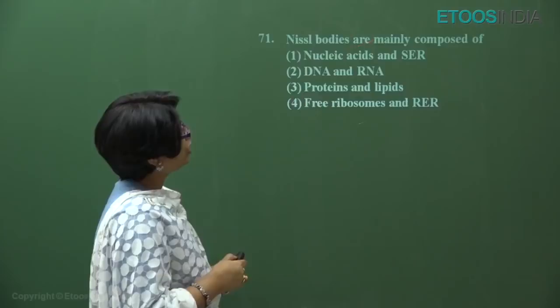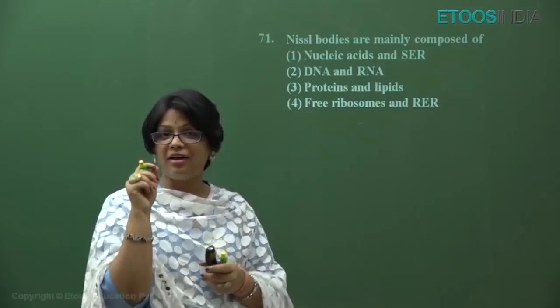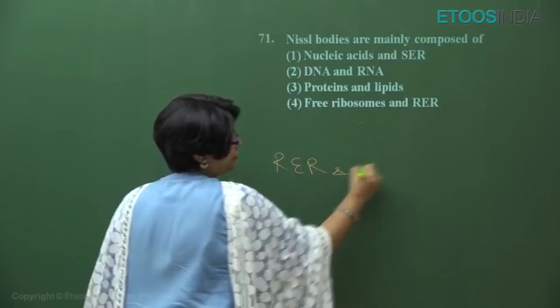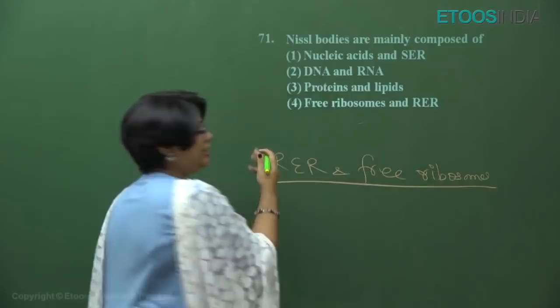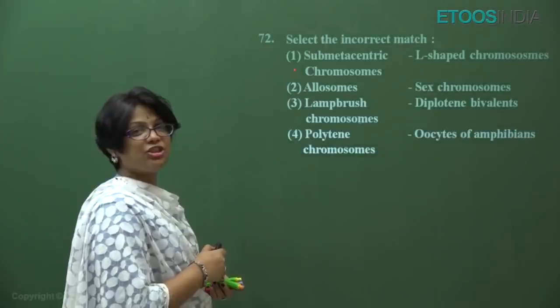Question number 71: Nissl bodies are mainly composed of — when we read about neurons, the cell body and dendrites contain particles made of rough ER (RER) and free ribosomes — these are called Nissl granules or Nissl particles. The direct answer is RER and free ribosomes — answer is four.